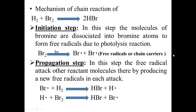For the mechanism of a chain reaction we'll take the example: H₂ + Br₂ → 2HBr. In the initiation step, the bromine molecule undergoes dissociation due to a photolysis reaction to form bromine free radicals. In this step the bromine molecules are dissociated into bromine free radicals due to photolysis. This is called the initiation step.